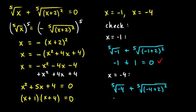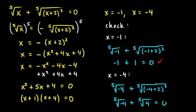I'll leave the first term in that form for now. For the second term, negative 4 plus 2 is negative 2, and negative 2 squared is positive 4. So it's the fifth root of positive 4. I don't know what those numbers are exactly, but you can see they are equal and opposite, so they add up to 0. Both solutions work: x equals negative 1 and x equals negative 4.